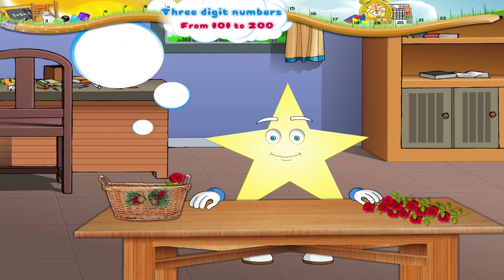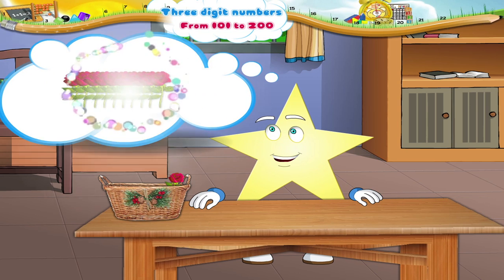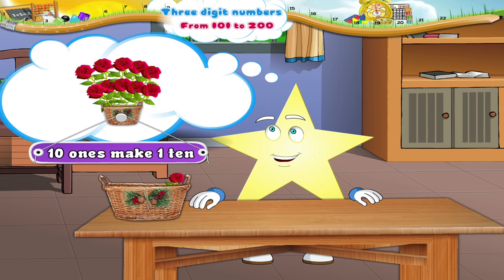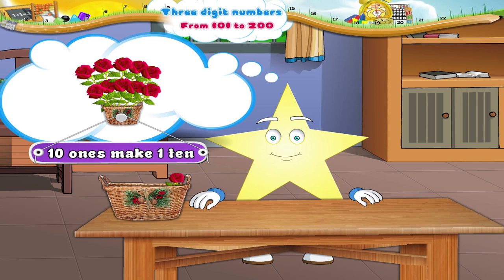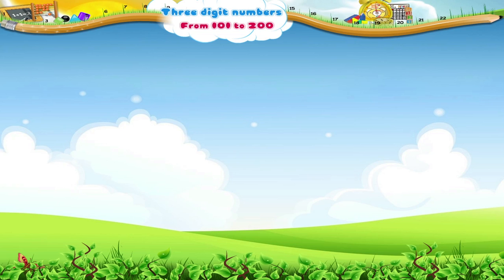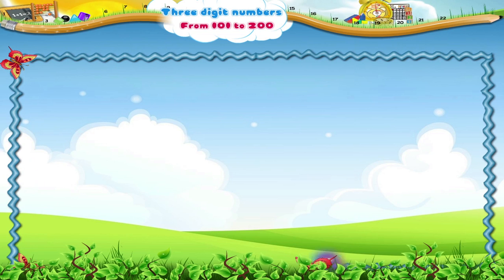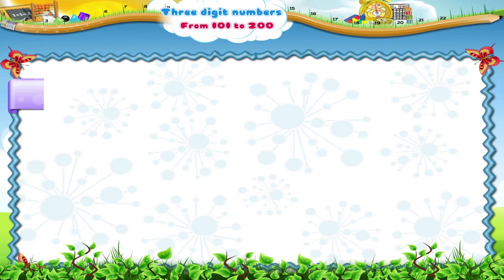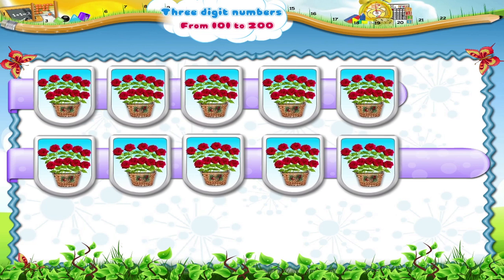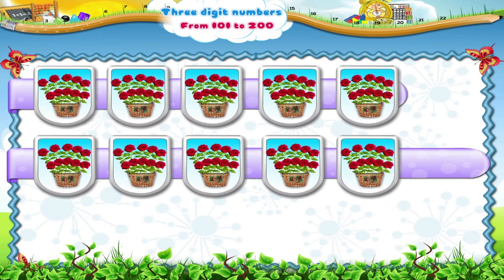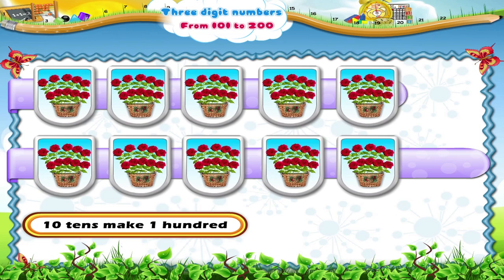Do you know, Starry? Ten ones make one ten. Then let's make a group of ten flowers. What do we get here? We get ten groups of ten flowers each. These ten tens make one hundred.